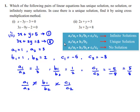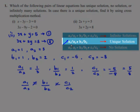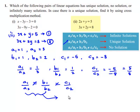So, from the second condition we can say that if a1 by a2 is not equal to b1 by b2, the given pair of linear equations have a unique solution. From this condition we can say the given pair of linear equations have unique solution.